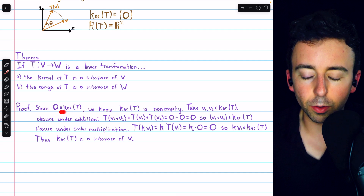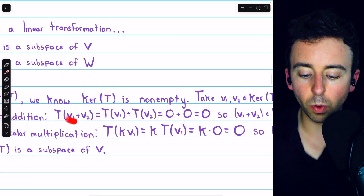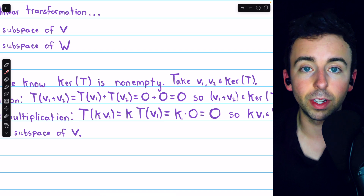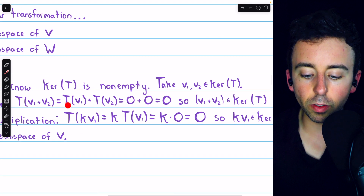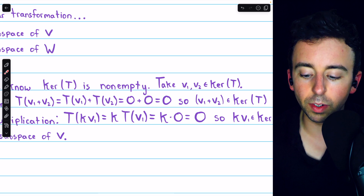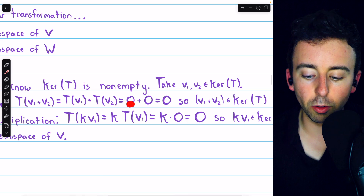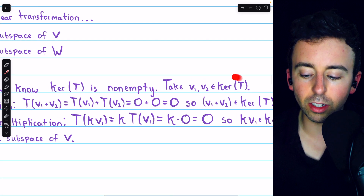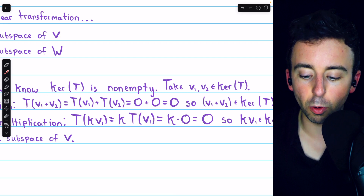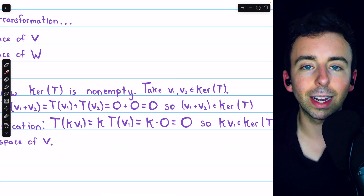Since the kernel is non-empty, we can take two arbitrary elements V1 and V2 from the kernel of T and show closure under addition. T of (V1 + V2) equals T of V1 plus T of V2 by the additivity property of linear transformations. Since V1 and V2 are in the kernel, T of V1 and T of V2 are both zero, so T of (V1 + V2) equals zero plus zero equals zero. Hence V1 + V2 is also in the kernel, and the kernel is closed under vector addition.